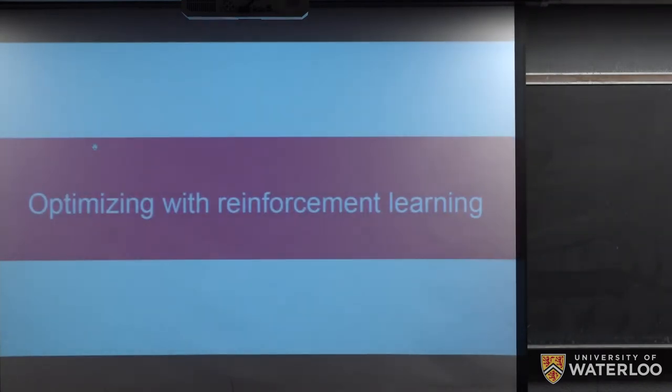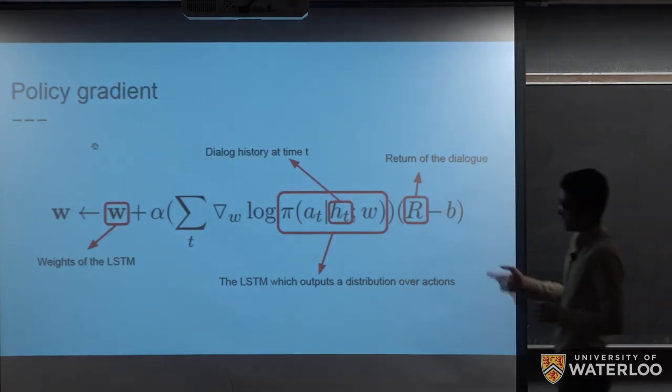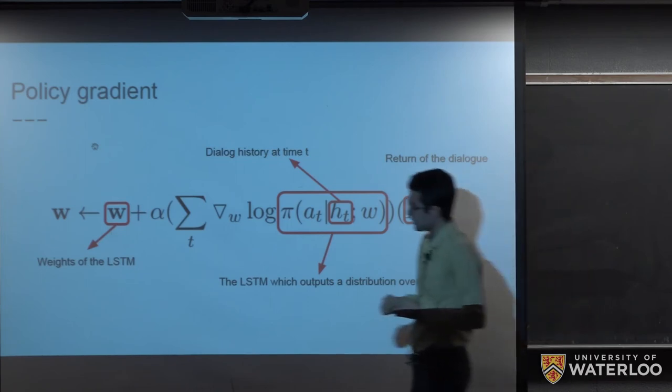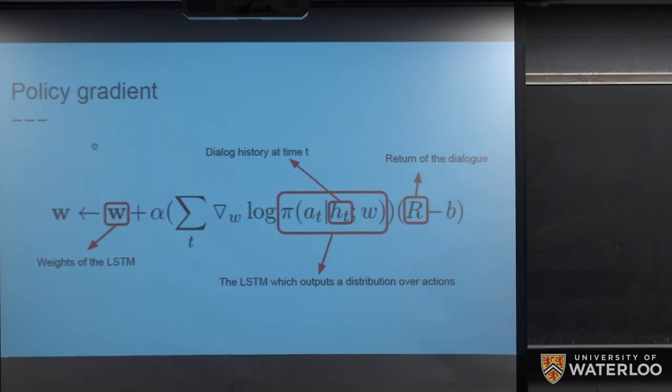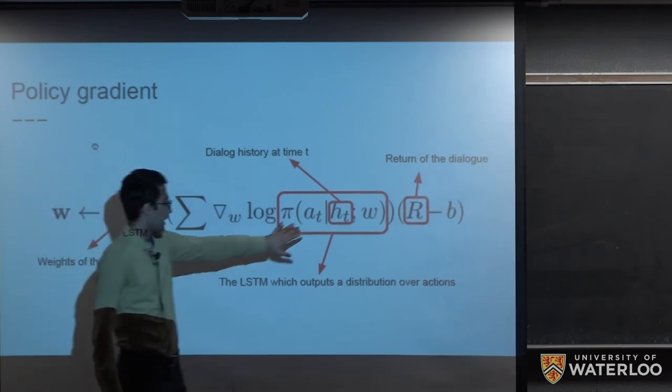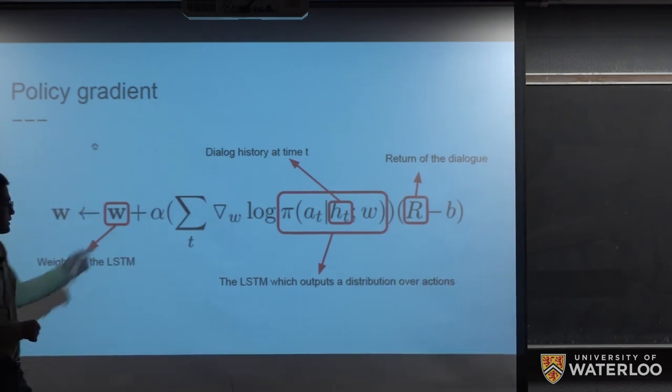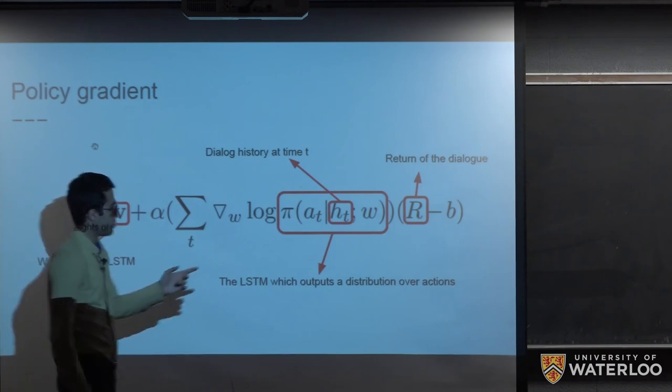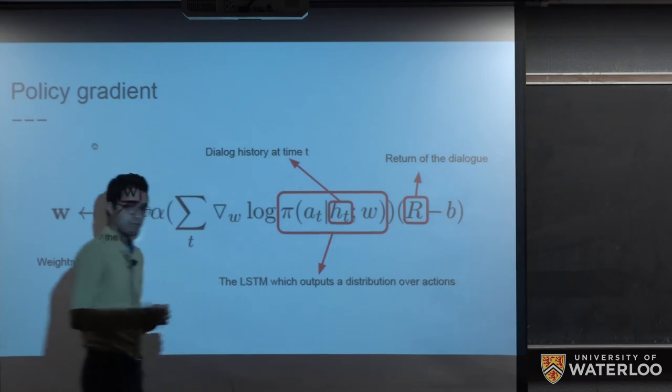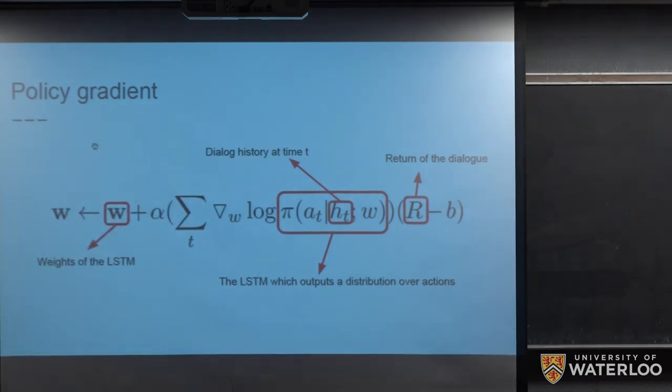And now, how can we optimize our model using reinforcement learning? They use policy gradient in their work. And they update the weights using this expression. Here, w is the weights of the LSTM network. And pi is the output of the LSTM network. It produces a distribution over all actions at time and step t, based on the dialogue history at time t, which is ht and the previous weights. Then this is multiplied by the capital R minus B. R here is the return of the dialogue, and B is a baseline. So intuitively here, we would have a positive gradient step if we have a good dialogue. And in that case, we make the actions in that dialogue more likely to happen. And if we have a bad dialogue, we would have negative gradient steps, and we make these selected actions in that dialogue less likely to happen.